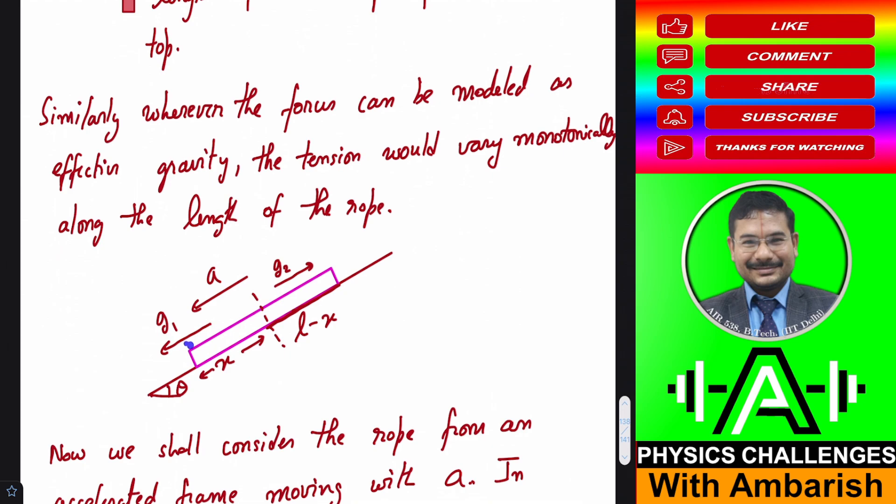What about the tension at the end points? The tension at the last element here must be zero, because the last element is almost massless, so frictional force is negligible, mg sine theta part is also negligible, therefore the tension must be negligible. Similarly at the other top end also the tension must be negligible for the same reasons. So the tension cannot be maximum at either end. From here to here the tension has to vary monotonically, so maximum tension must occur at the interface of the rough and smooth portions.